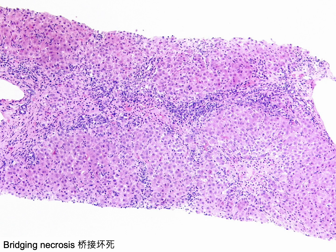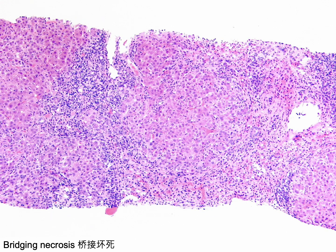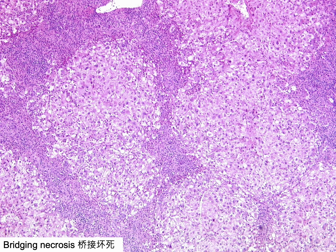A large area of hepatocyte loss with inflammatory infiltrate connects a central vein on the right with a portal tract on the left. In the classical Lobular model, this is known as portal-central bridging necrosis; according to the Rappaport Acinar model, it represents extensive zone 3 confluent necrosis. Bridging necrosis indicates highly active and severe damage to the liver parenchyma and can occur in acute viral hepatitis, drug-induced liver injury, and autoimmune hepatitis. Extensive bridging necrosis with islands of remaining hepatocytes exhibiting hydropic changes is not uncommonly mistaken for bridging fibrosis or cirrhosis.